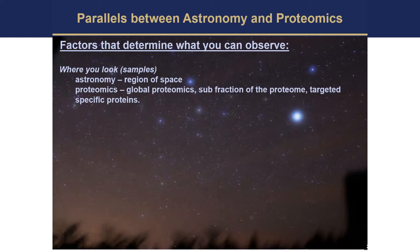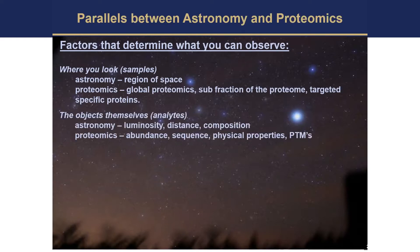Just like in astronomy we have to look at a specific region in space. Just like stars — different factors determine whether or not you see that star: how bright is it, how far away is it, what is the chemical makeup? Similarly in proteomics, a lot of times people ask, can you see this protein? And we tell them, it depends — what's the abundance, what's the sequence of that protein, what are the physical properties? We're ionizing the sample, so we have to be able to get enough signal for it to be detected. Post-translational modifications can also impact whether we see that protein.